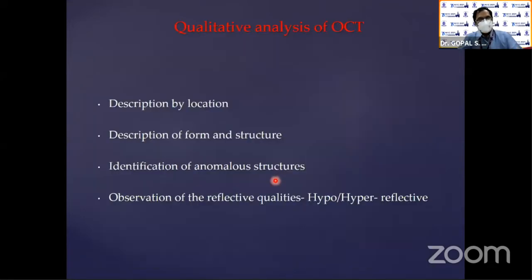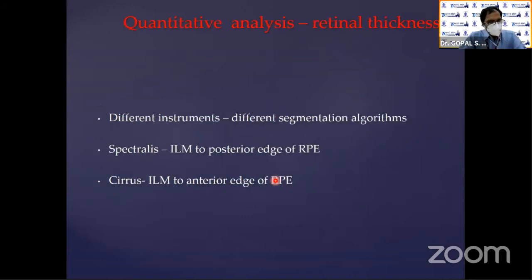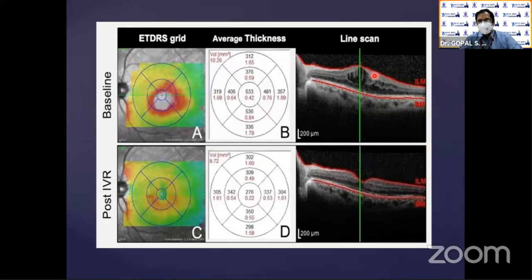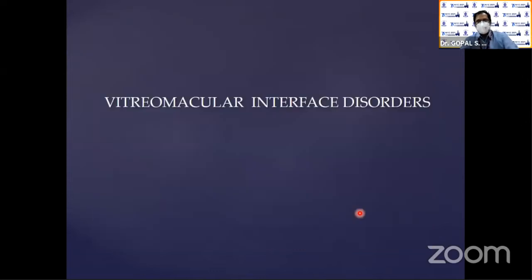In qualitative analysis, description is done by location — where is it — form and structure, what is the anomaly, and reflective qualities, whether it is hypo- or hyper-reflective. In quantitative analysis, whenever we are looking at serial OCTs, we should always look at quantitative data. Different segmentation algorithms are available — this is a typical macular thickness map. You can see the change analysis comparing a previous scan to the current scan.